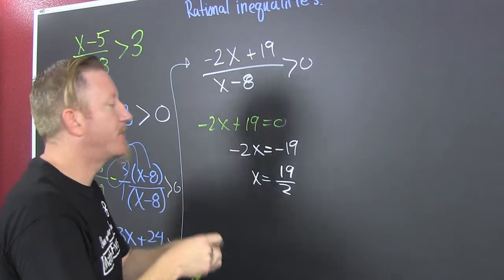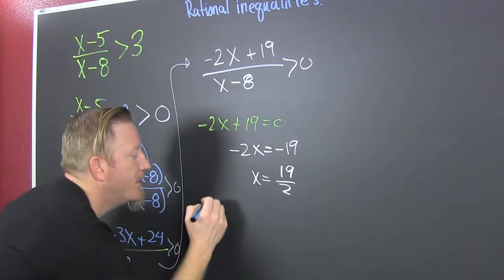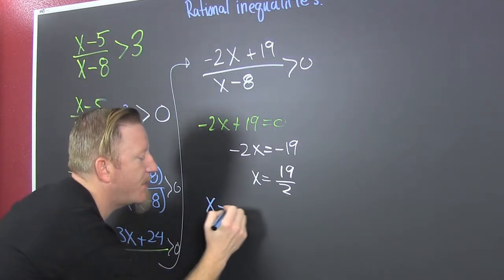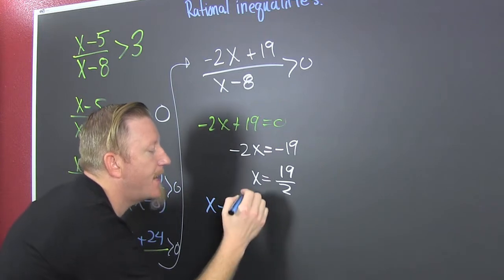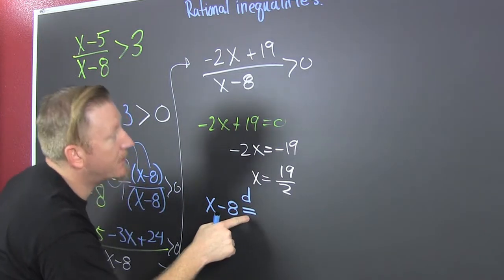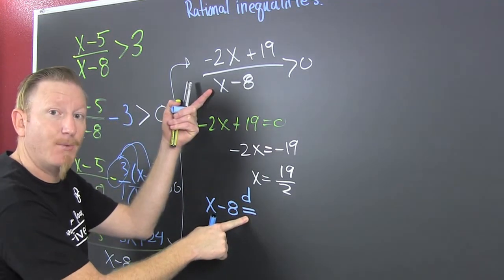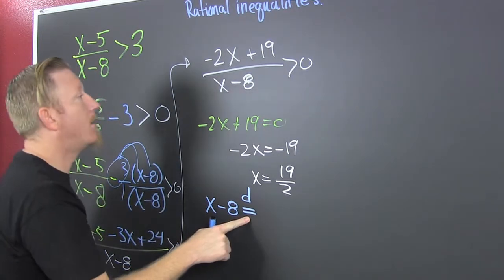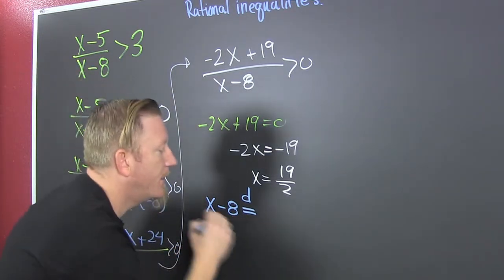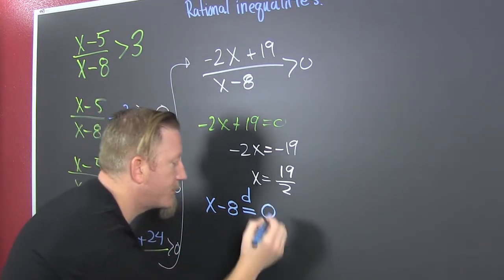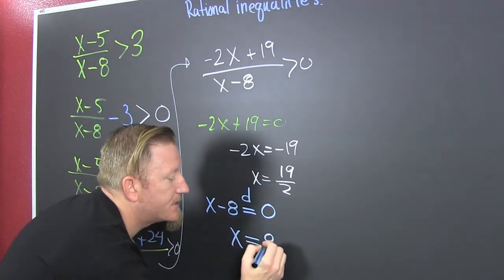So 19 halves is one of our critical values. Then we look at the denominator: x minus 8 equals 0. We give it a 'd' because it comes from the denominator, and we'll see why that's important later. So x equals 8.